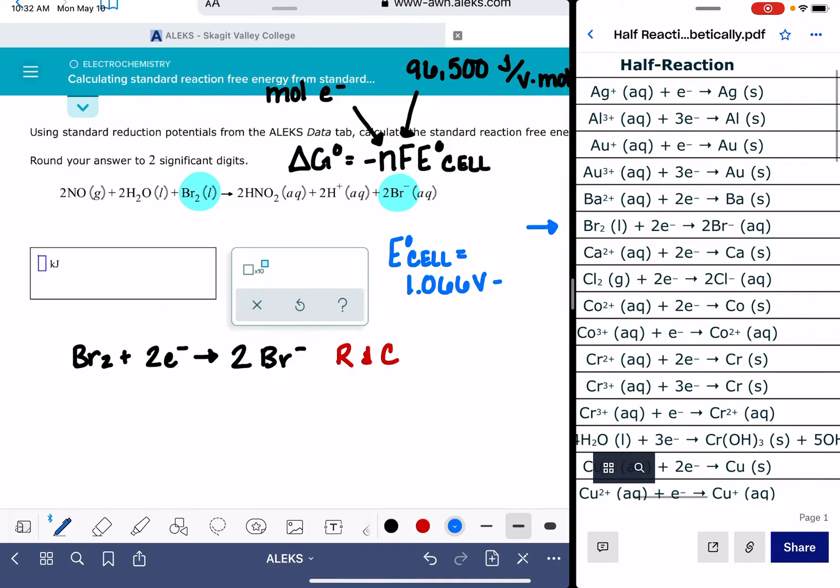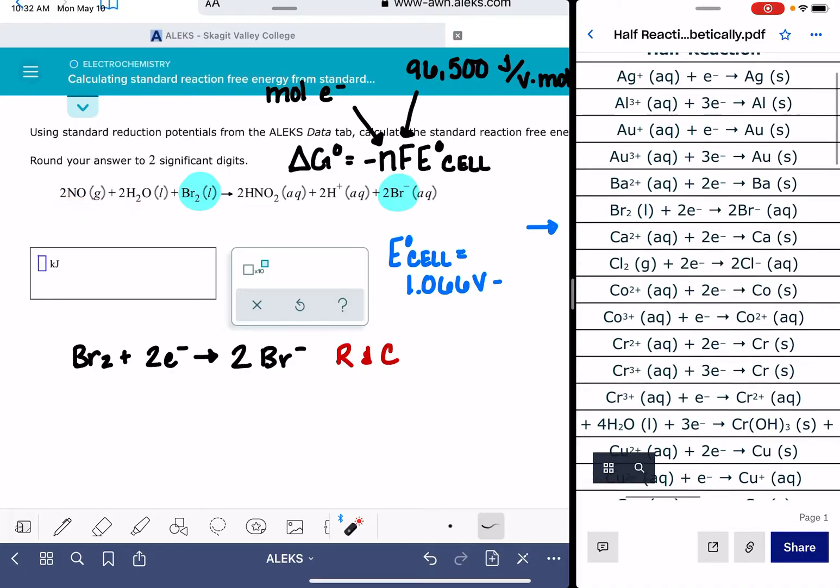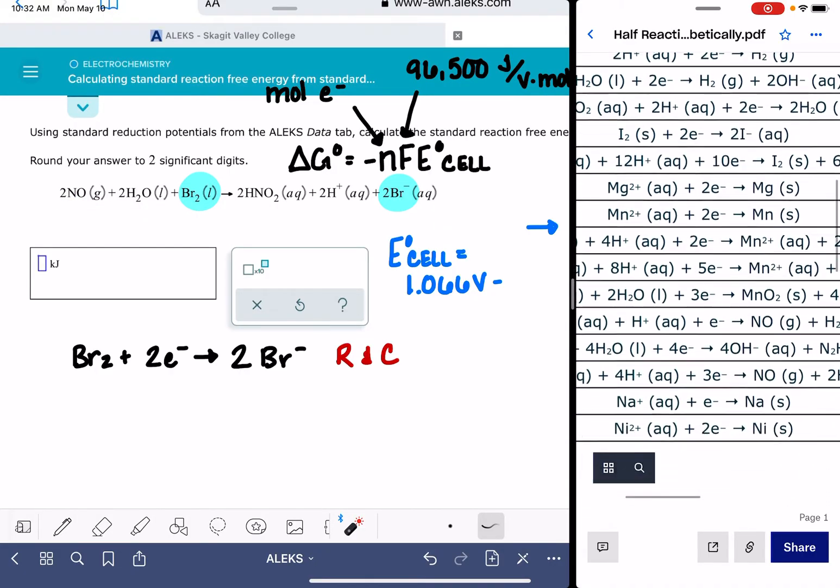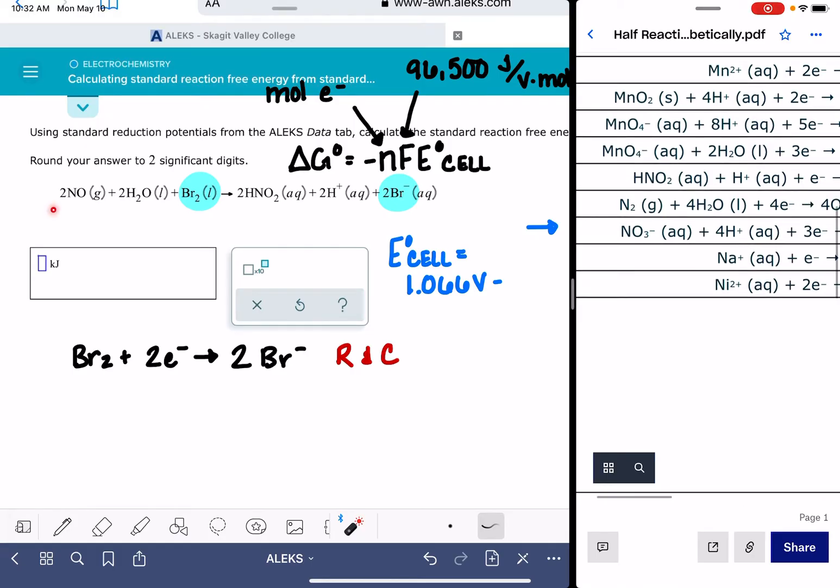So now that I have this one found, I'm going to go find the other half reaction. This one involves some nitrogen. It could be alphabetized under the Ns, maybe the Os, maybe the Hs, probably the Ns. That's where I'm going to look for it first.